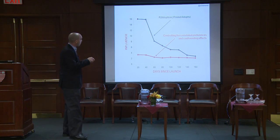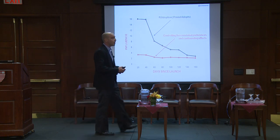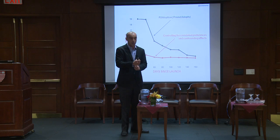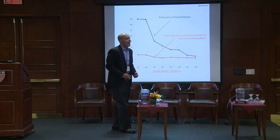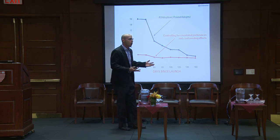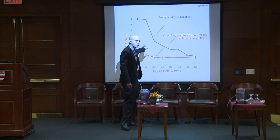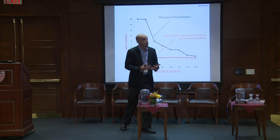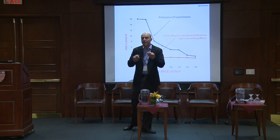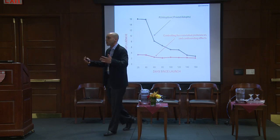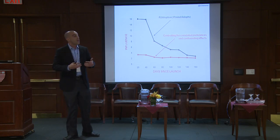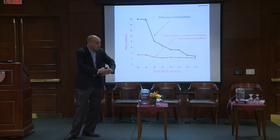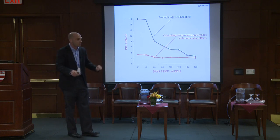If given the naive curve, a chief marketing officer would likely institute a peer-to-peer marketing strategy — giving people incentives to convince their friends to join. But that would be wrong, because the corrected curve shows true influence is much smaller; the rest is correlated preferences. Given correlated preferences, you would instead segment the market based on the likely characteristics of individuals likely to adopt and send them advertising directly. Those people would be connected in the network, but the two policies would have very different effects on the spread of the behavior.